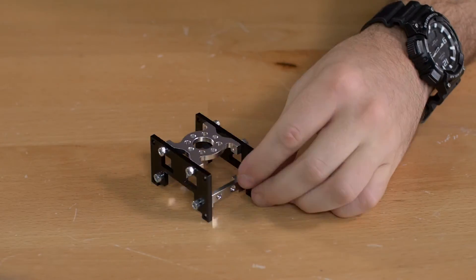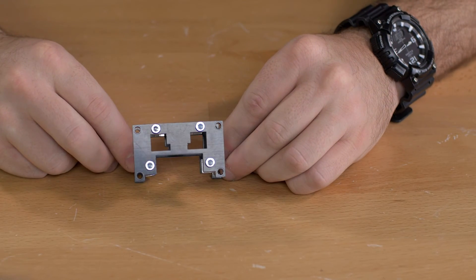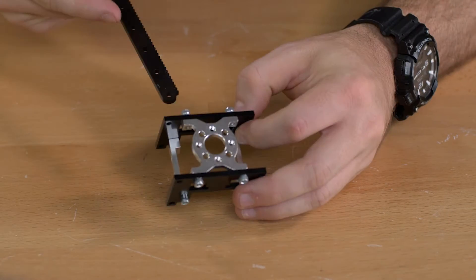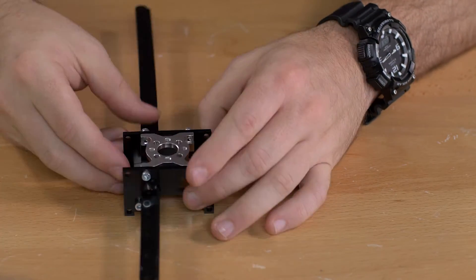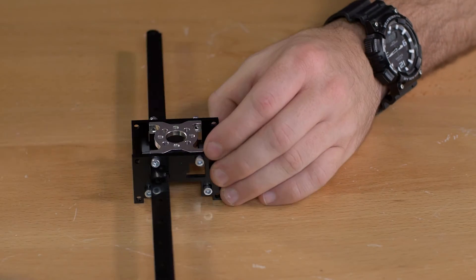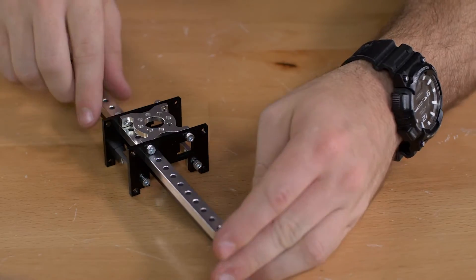Once we have that together, in each of these holes we have on the sides we're going to add the plastic beam gear rack followed by the aluminum beam.